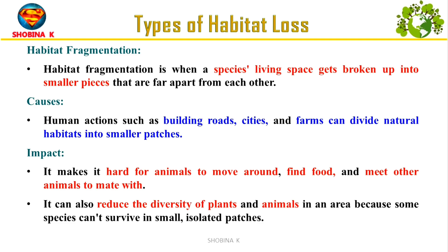Habitat fragmentation occurs when large continuous habitats are divided into smaller isolated patches, usually caused by human activities such as roads, agricultural fields, urban areas or infrastructure development. Fragmentation disrupts connectivity between habitats, isolating populations of species and reducing gene flow. Both habitat destruction and fragmentation make it harder for species to survive, reproduce and adapt to changes in their environment.